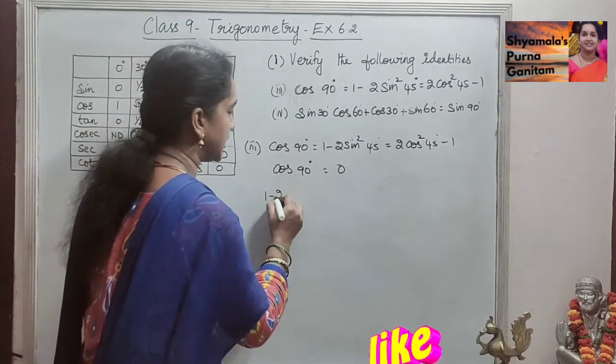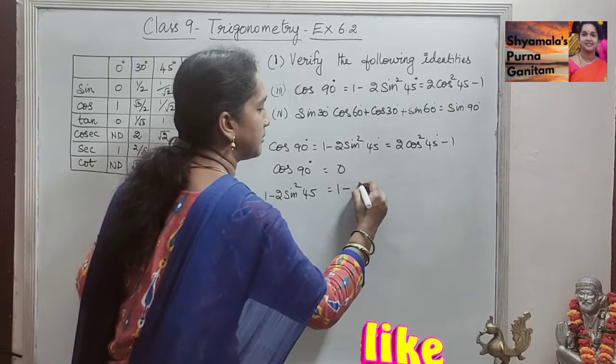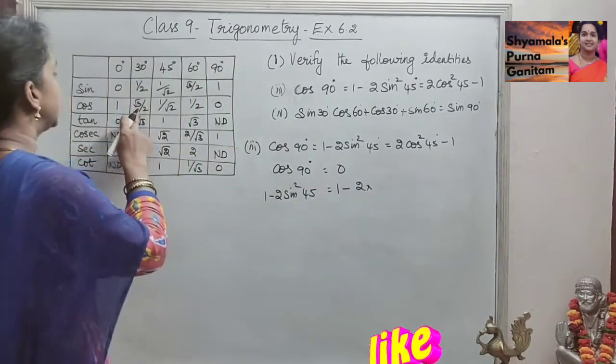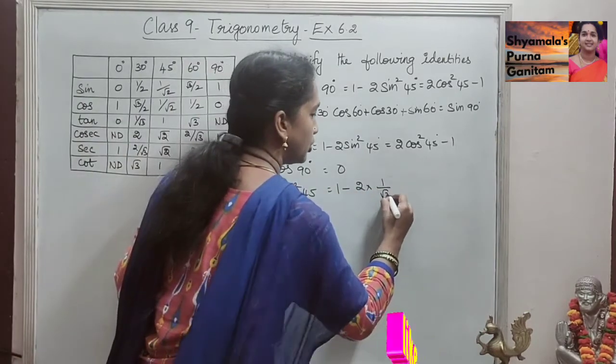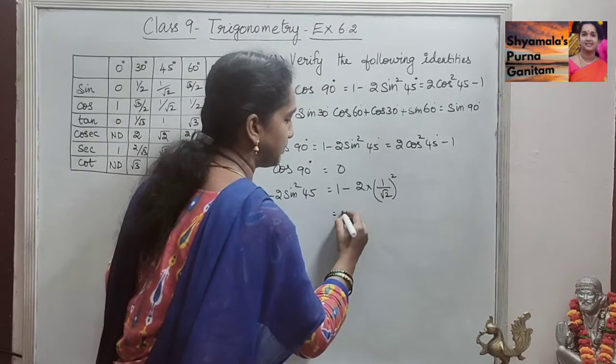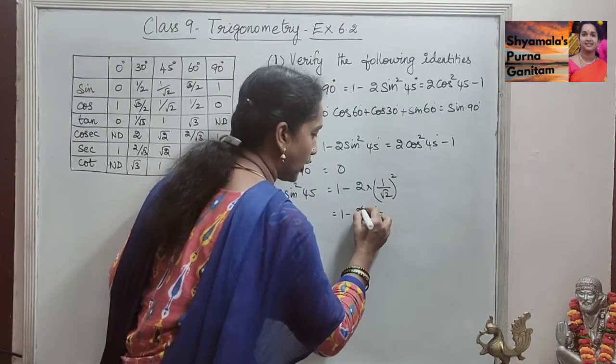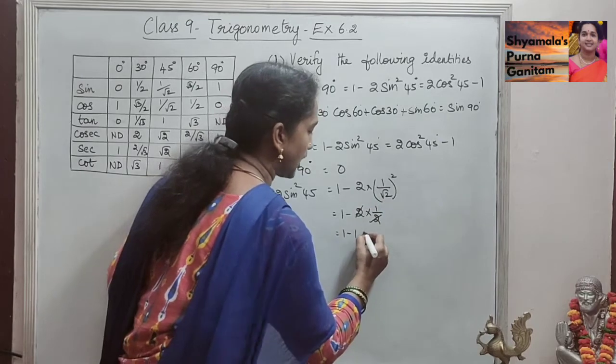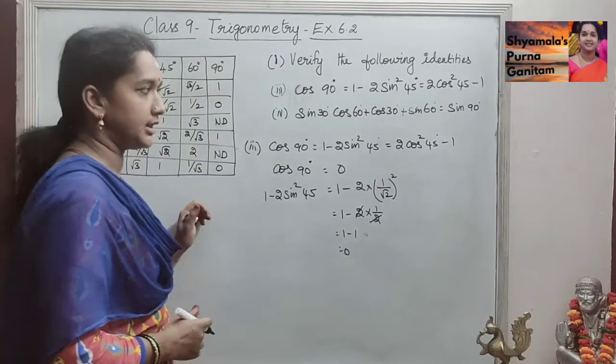Then we take 1 minus 2 sin squared 45°, that is equal to 1 minus 2 into sin squared, sin 45° value is 1 by root 2, 1 by root 2, here square is there, so the whole square. When we simplify this, 1 minus 2 into 1 by 2, the 2 and 2 will get cancelled, so 1 minus 1 is equal to 0. So, the second value also we got it as 0.